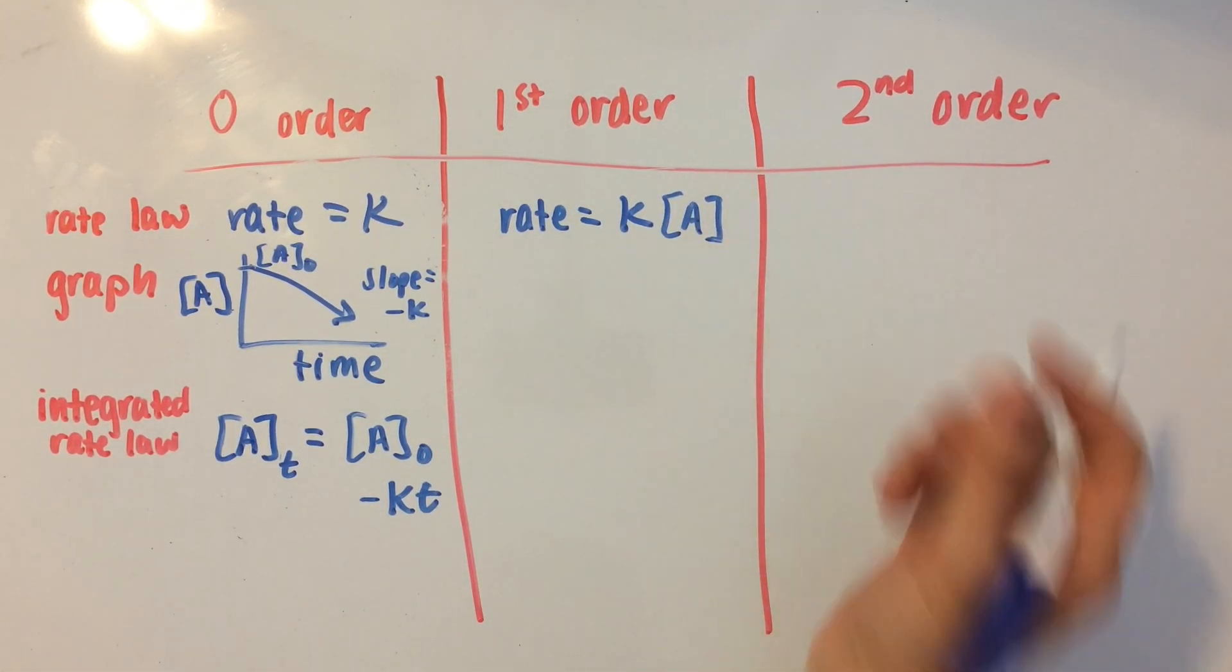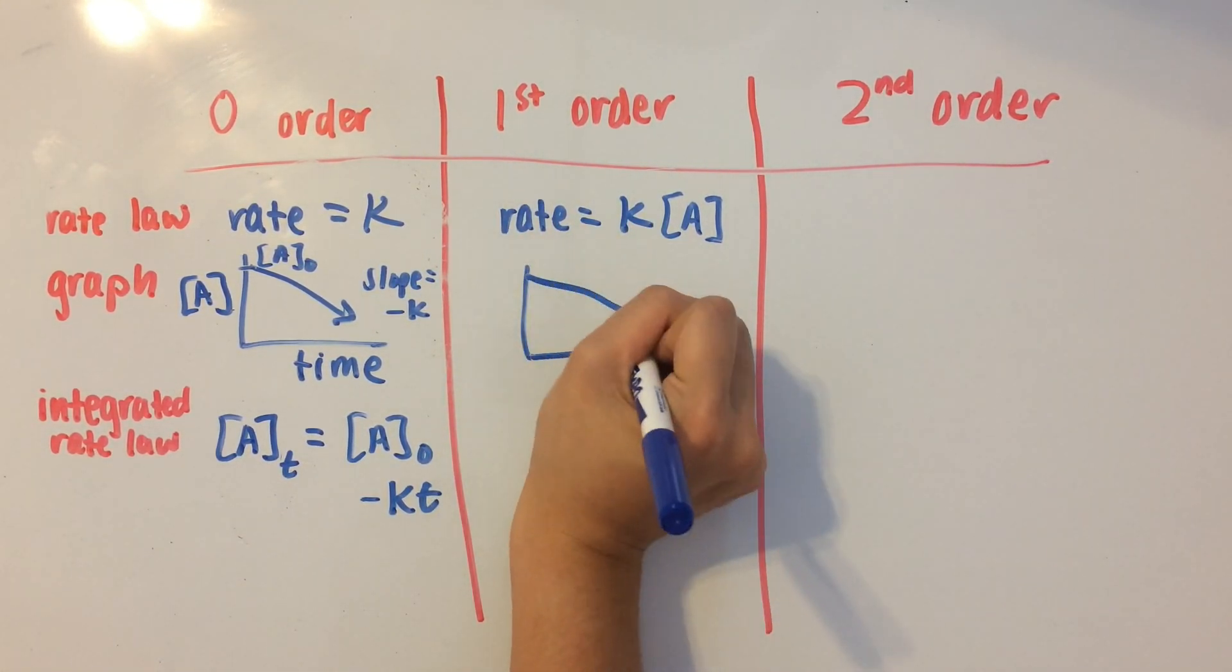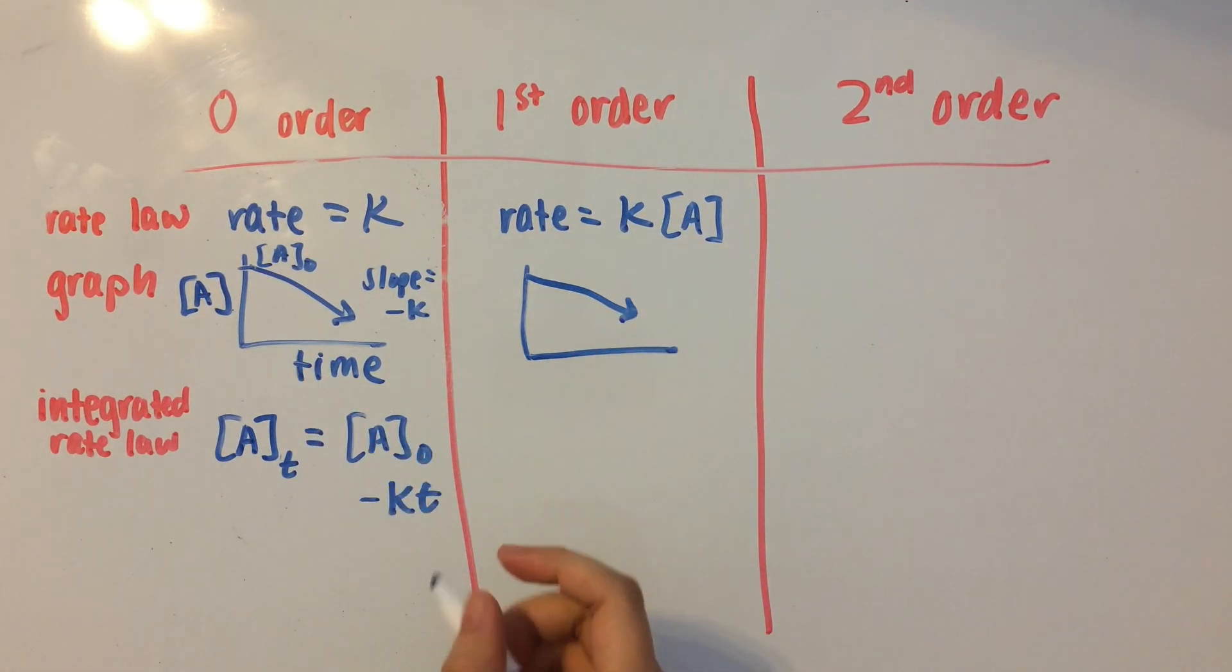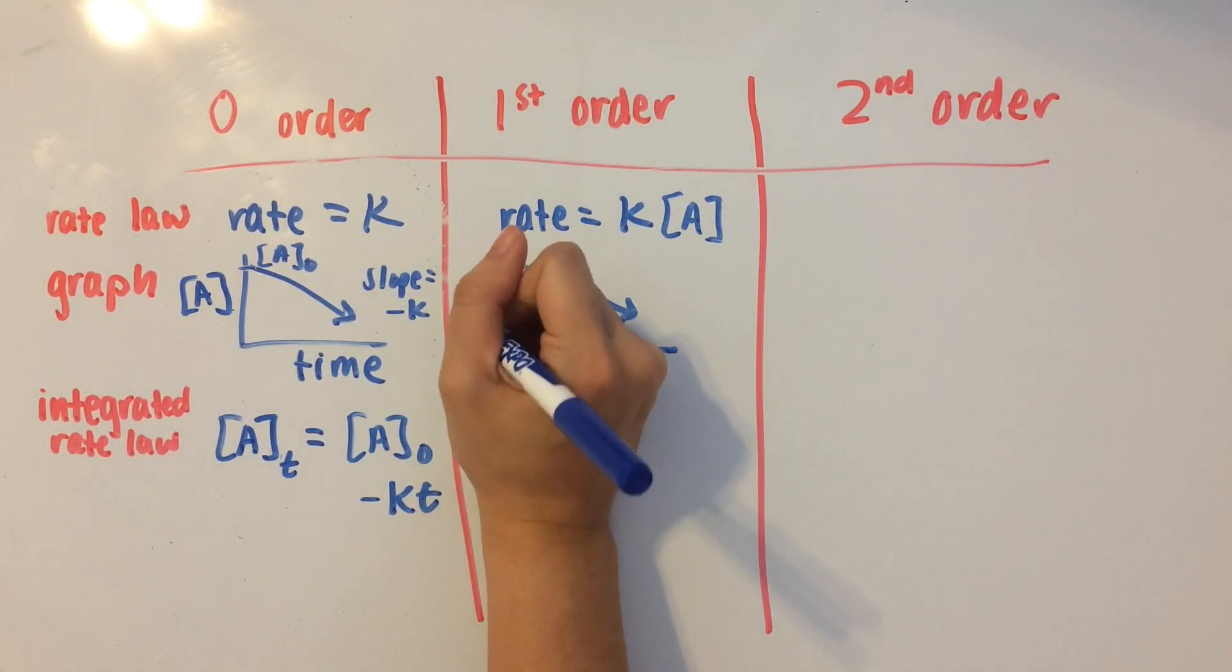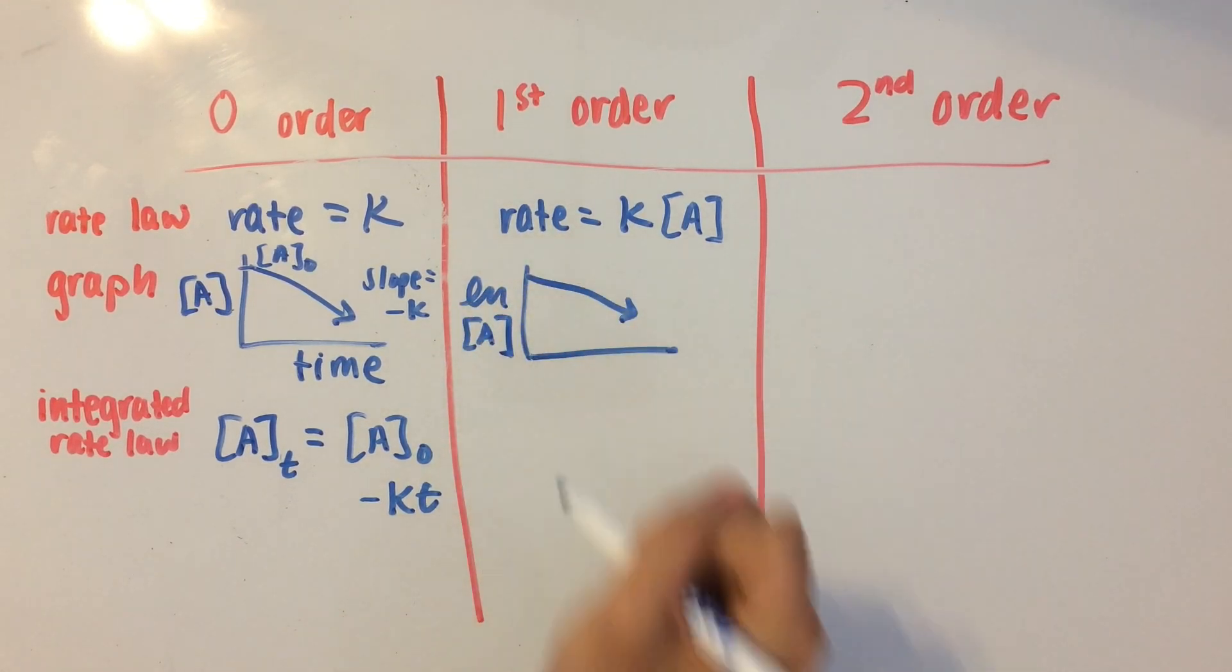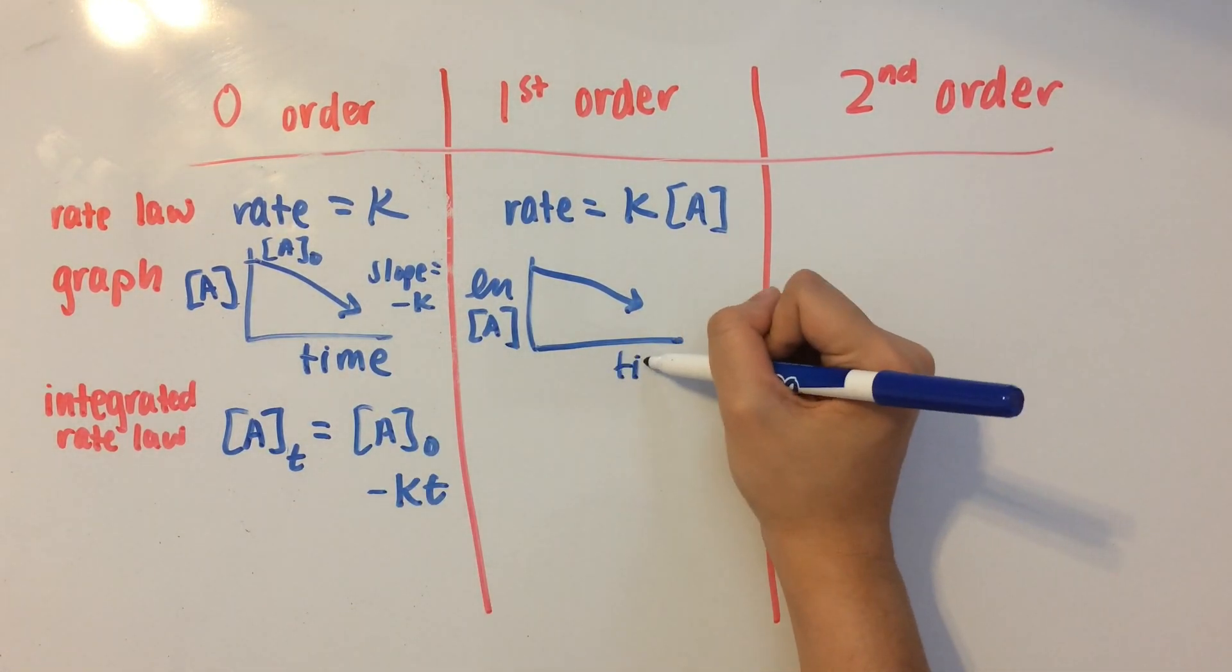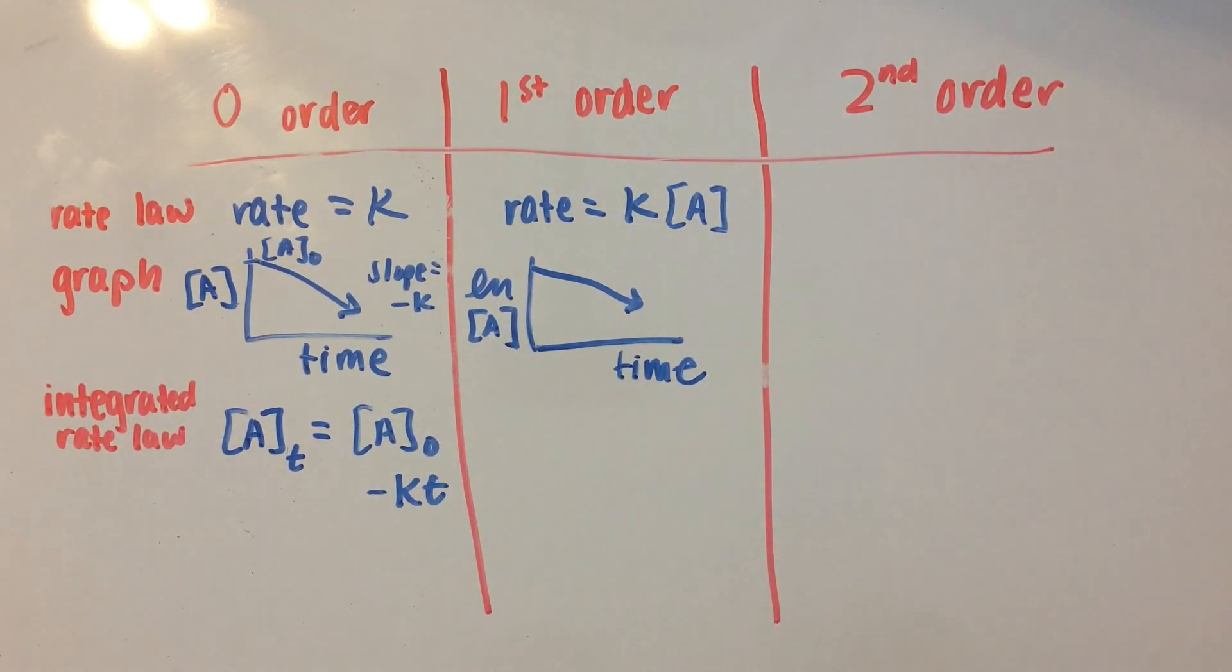Now the graph looks pretty much similar to a zero-order graph, except on the y-axis, you have the natural log of the concentration of A instead of just concentration of A. Then we also have time on the x-axis.